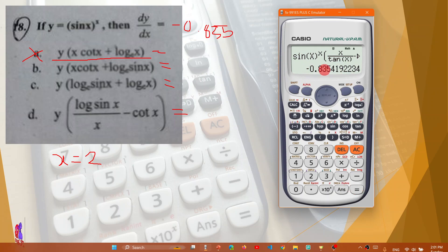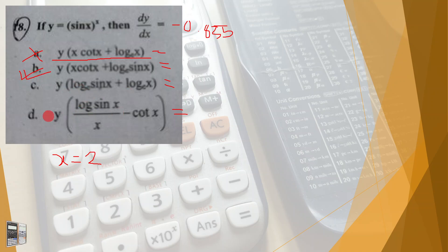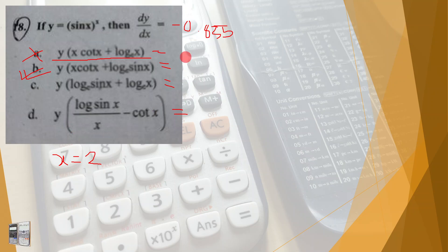Minus 0.835 matches the question value, so option B is the correct answer. We have seen that x and x give the same value in this check.